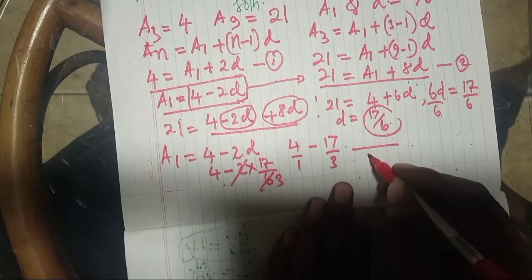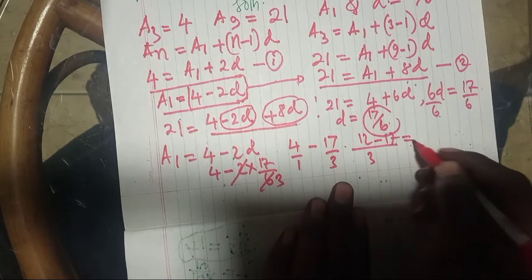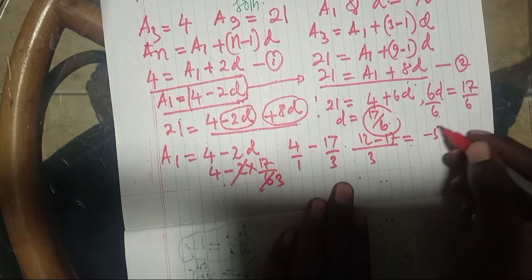The LCM will be 3, then this is 12 minus 17, which gives us negative 5 over 3.